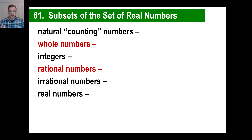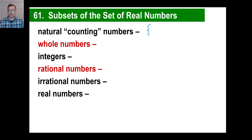Let's start with natural or counting numbers. You will not be surprised to learn that the natural counting numbers start with 1. Then of course you go to 2, then 3, and so on — I'll put a little ellipsis there.